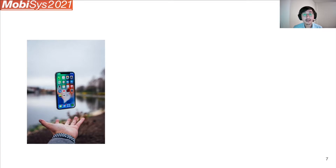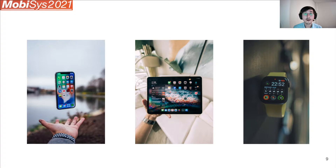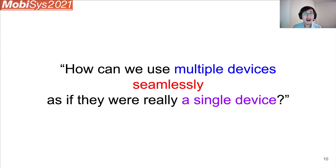These days, a lot of us have multiple devices — for example, a smartphone, a tablet, a watch, and other kinds of devices. Mostly, these devices work as separate, individual devices. So researchers have long been asking: how can we use multiple devices seamlessly as if they were really a single device? Over the years, many interesting papers have approached this problem from many different angles. Since there are quite a few papers that deal with this question, I am just going to mention a few that I believe are directly related to TAP.